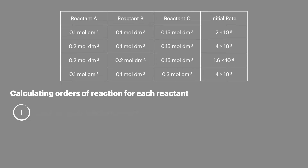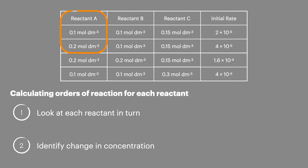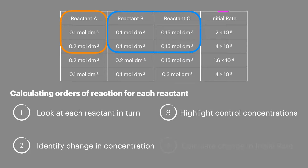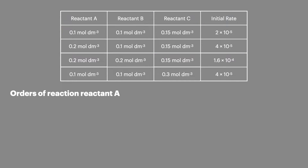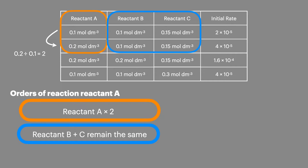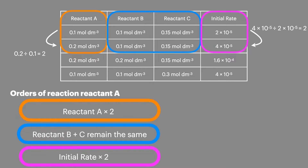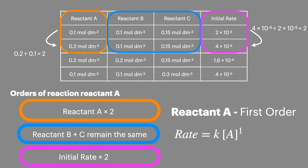First, look at each reactant in turn. Then identify the changing concentrations. Then highlight the control concentrations. And then finally look at what impact that's had on the initial rate. If you follow these four steps for each reactant you'll quickly be able to build up the rate equation. We'll now work through the whole data set and calculate the rate equation, starting by looking at reactant A on the first two lines — we can see it doubles, reactant B and C remain constant, and the initial rate is also doubling. This shows the reactant to be first order, allowing us to start building the rate equation with the concentration of A to the power of one.